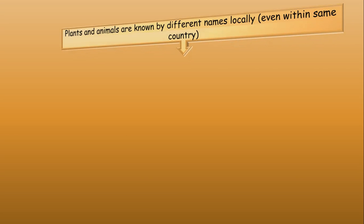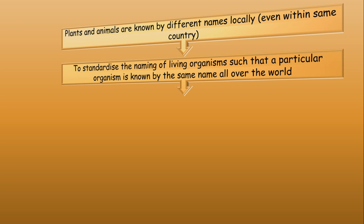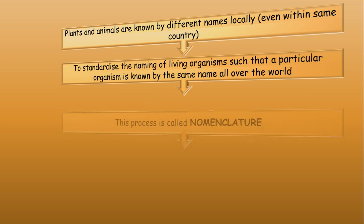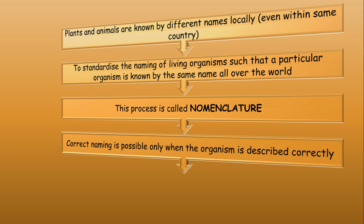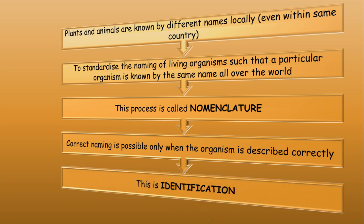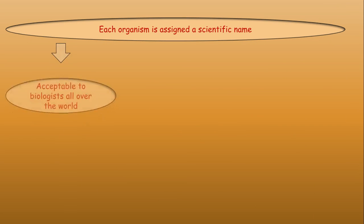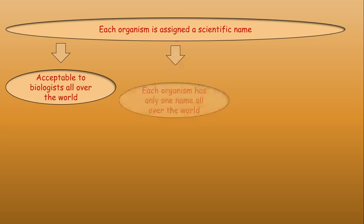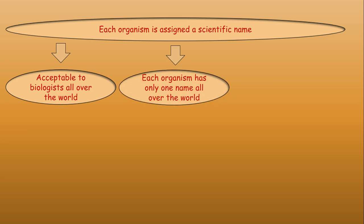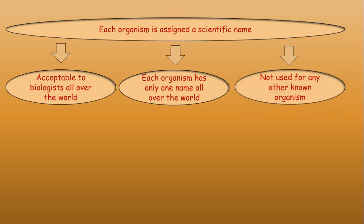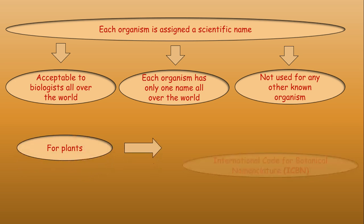Plants and animals are known by different names locally, even within the same country. To standardize the naming of living organisms so that a particular organism is known by the same name all over the world, there is a process called nomenclature. Correct naming is only possible when the organism is correctly described, which is known as identification. Each organism is assigned a scientific name acceptable to biologists worldwide, and this name is unique to each organism.